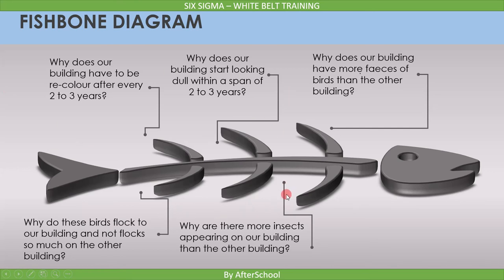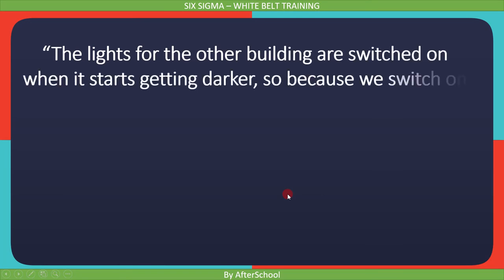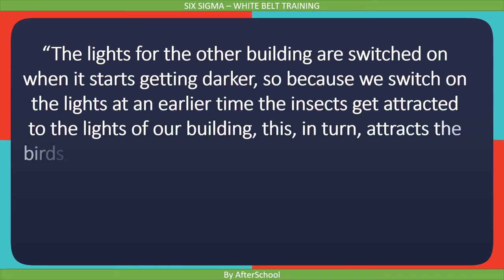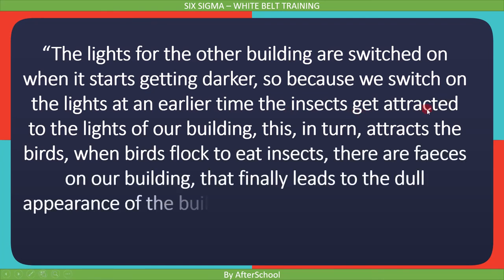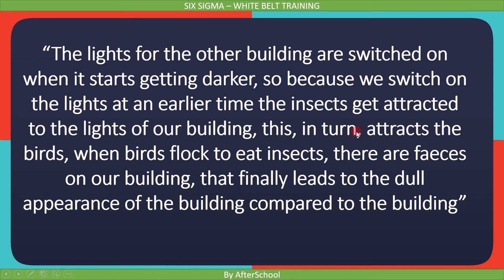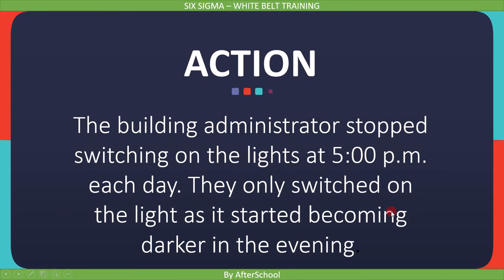The analysis concludes: the lights for the other building are switched on when it starts to get darker. Because we switch on the lights at an earlier time, the insects get attracted to our building's lights. This in return attracts the birds. When birds flock to eat insects, there are feces on our building, which finally leads to the dull appearance compared to the other building. As a resulting action, the building administrator stopped switching on the lights early — they only switched on the lights as it started becoming darker in the evening. After all, they acted on the root cause, and because of this, they no longer have the problem.